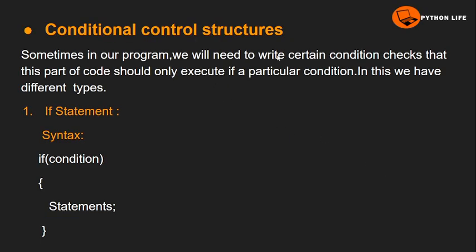Conditional control structures are based on conditions. Depending on the program, certain statements will be executed. The different types of conditional statements are: if statement, else statement, else-if, nested if, and switch. The syntax is important — if the condition is satisfied, meaning true, then those statements will be executed.